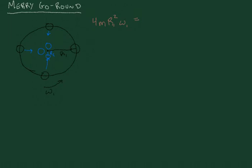And then afterwards, after three of the children have moved into the middle, we would have 3M R2 squared Omega-2, plus M R1 squared Omega-2. In other words, these are the three children located in the middle, and then this is the one child who's still located on the outside.